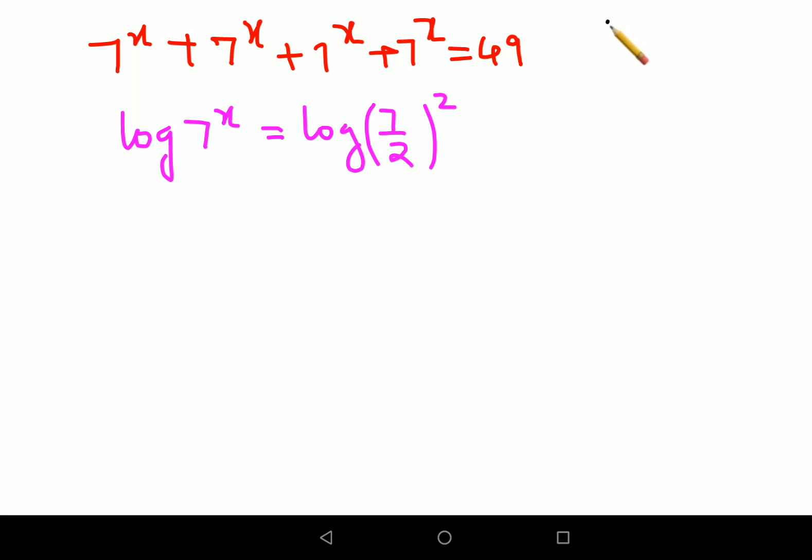There is a property of logarithms where log(a^m) = m·log(a). So here, we can write this as x·log(7) = 2·log(7/2).